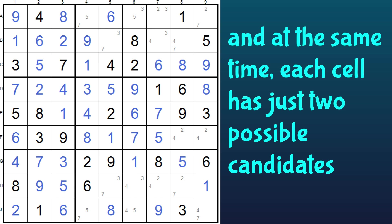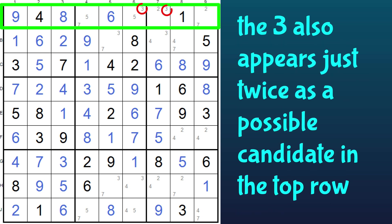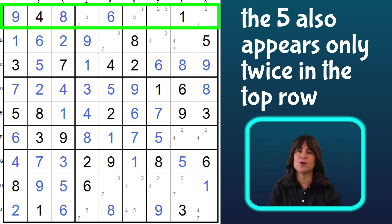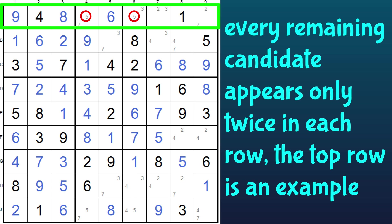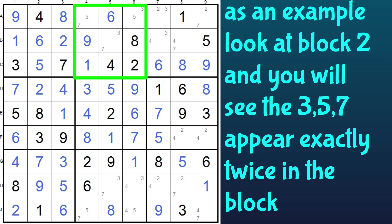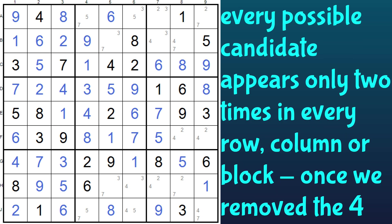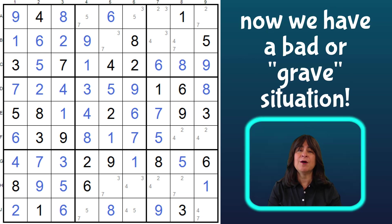For example, look at the top row. The two appears twice, the three also appears two times, and the same is true for the five and the seven. The same is true for the blocks — every remaining candidate appears only twice in each block. Look at block two: the three, five, and seven appear only two times. And the same for columns — take a look at column four: the five and seven appear exactly two times. So every possible candidate appears only twice in every row, column, or block, once we remove the four from this cell.